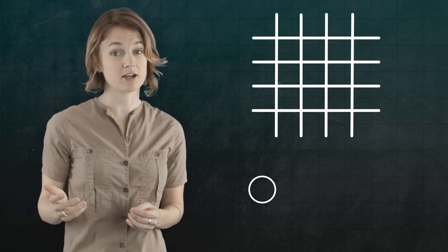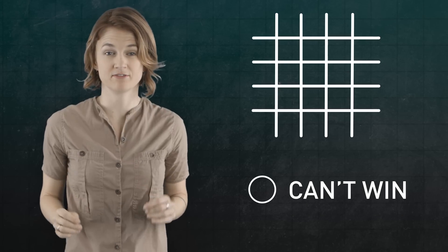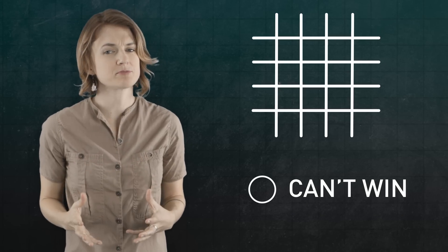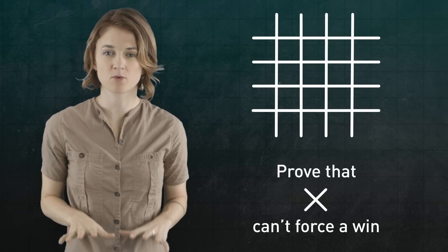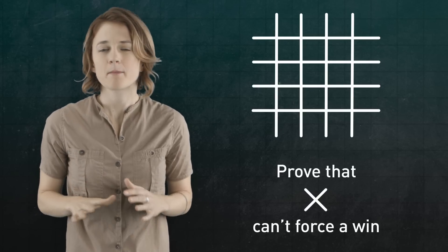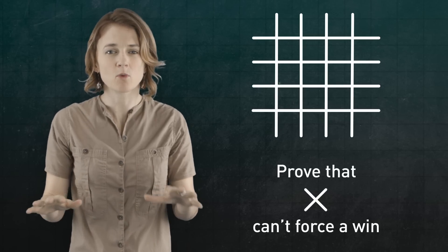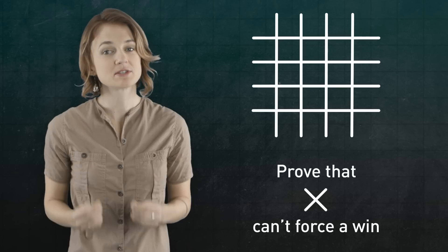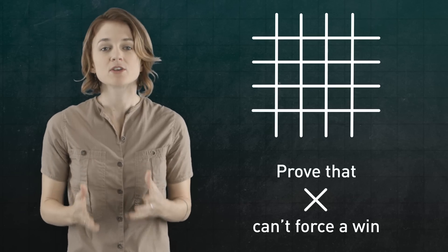5x5 tic-tac-toe is a draw. Under optimal play, there's no way for either player to force a win. Let's prove that. We already know that O, the second player, can't win any variant of tic-tac-toe. So, we only have to prove that X, the first player, can't force a win on the 5x5 board. Basically, we want to show that no matter where X moves, there is still space for O to block.